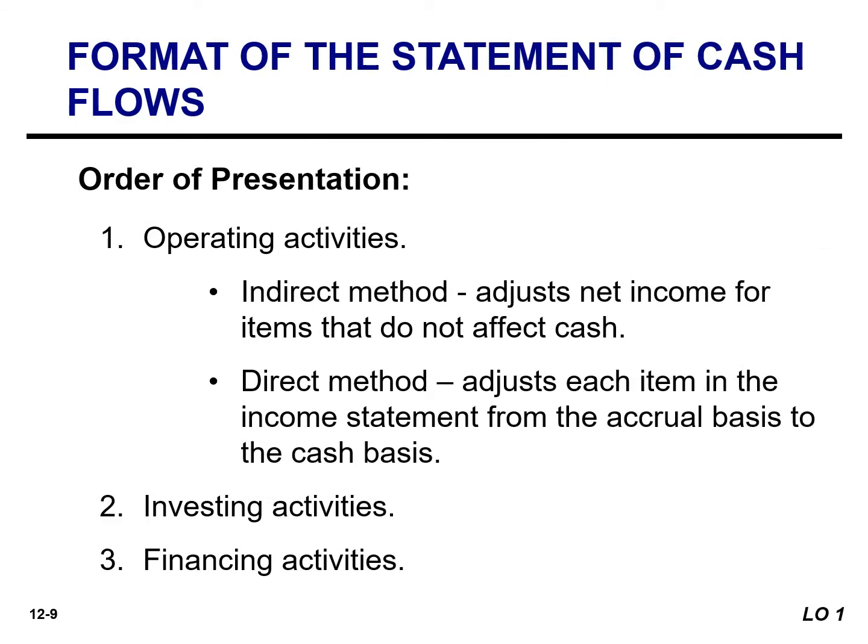The general format of the statement of cash flows presents the results of the three activities we just discussed — operating, investing, and financing — and we also need to disclose any significant non-cash investing and financing activities. In order to perform step one, a company must convert net income from an accrual basis to a cash basis. There are two methods a company may select: the indirect method or the direct method. Both methods arrive at the same amount for net cash provided by operating activities, but they differ in how they arrive at that amount.